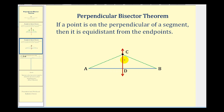This is a pretty straightforward proof. If we know that the red line is a perpendicular bisector of this blue segment, that tells us two things. First, segment AD is congruent to segment BD, and angle CDA and angle CDB are right angles, and therefore those two angles would be congruent. And if we make a segment connecting point C to point A and point C to point B, we can see that we have two triangles that share side CD.